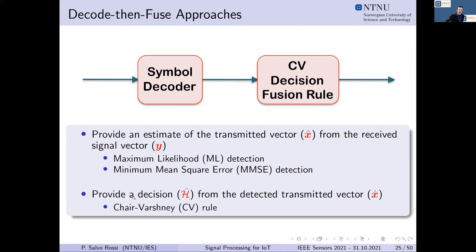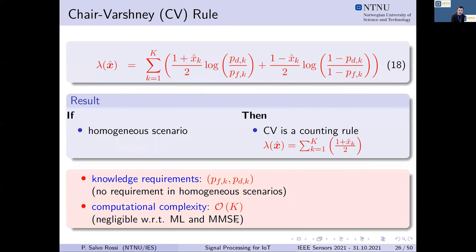In this approach, the decision combining based on sensor information is typically based on the Chair-Varshney rule — the optimum way of implementing this voting scheme. The reconstruction of information vector X from received vector Y can be done using classical communication decoding schemes, either maximum likelihood detection or MMSE detection. These are the two rules we will present.